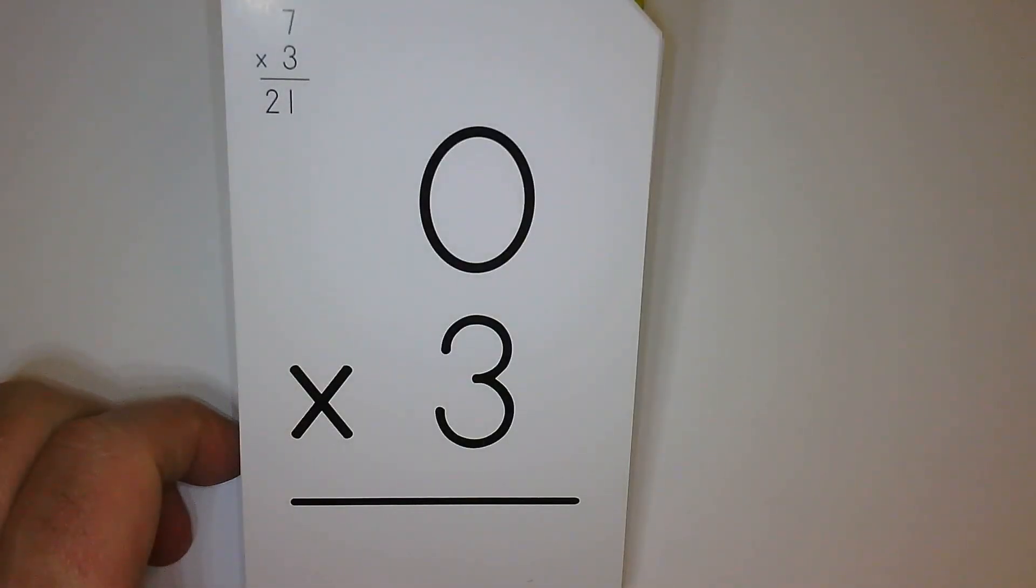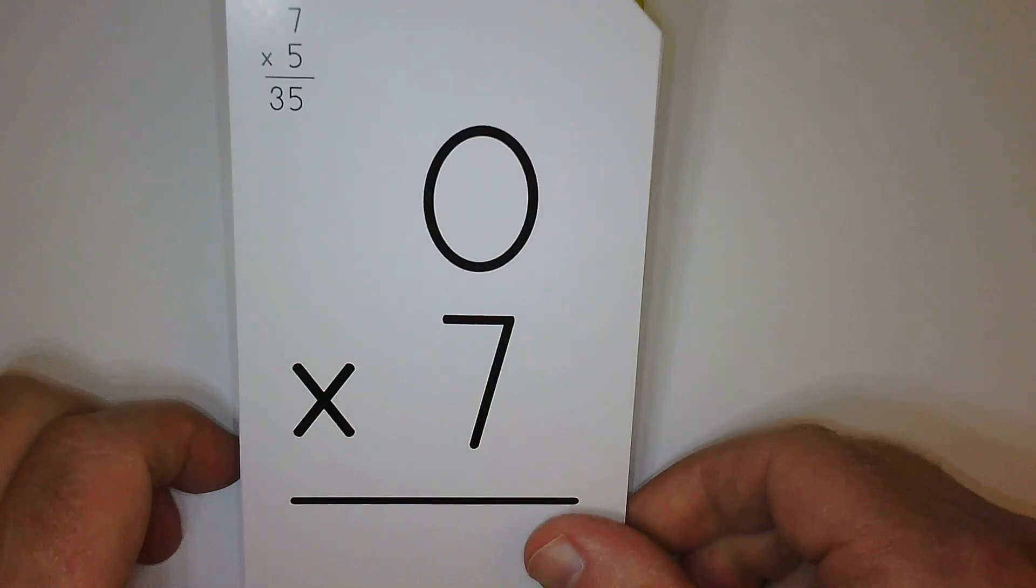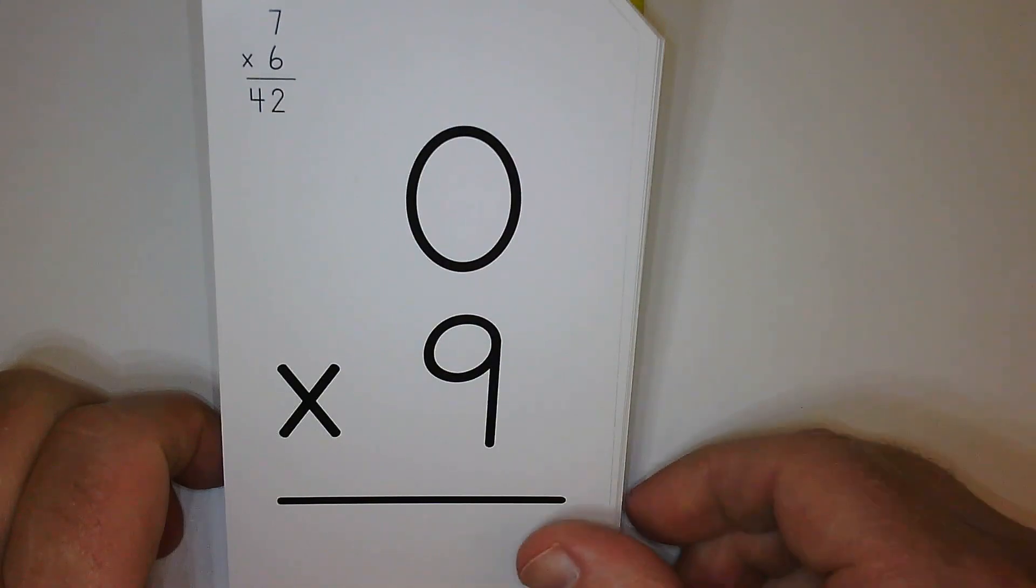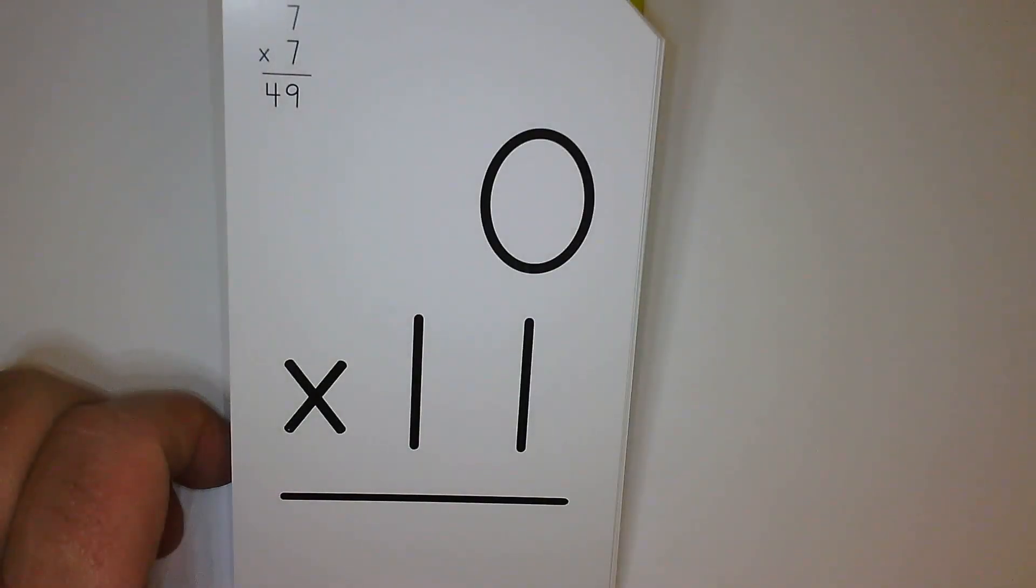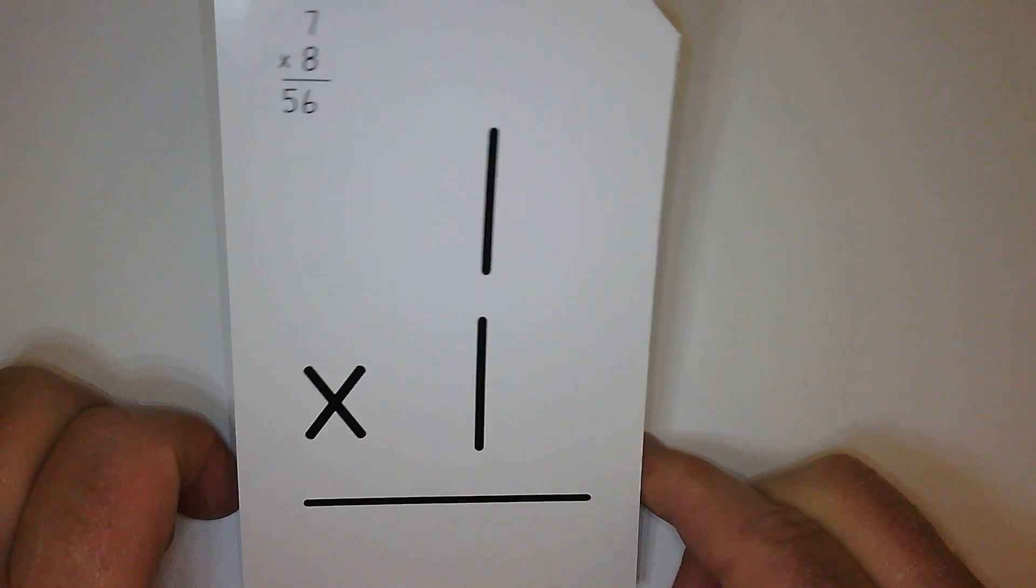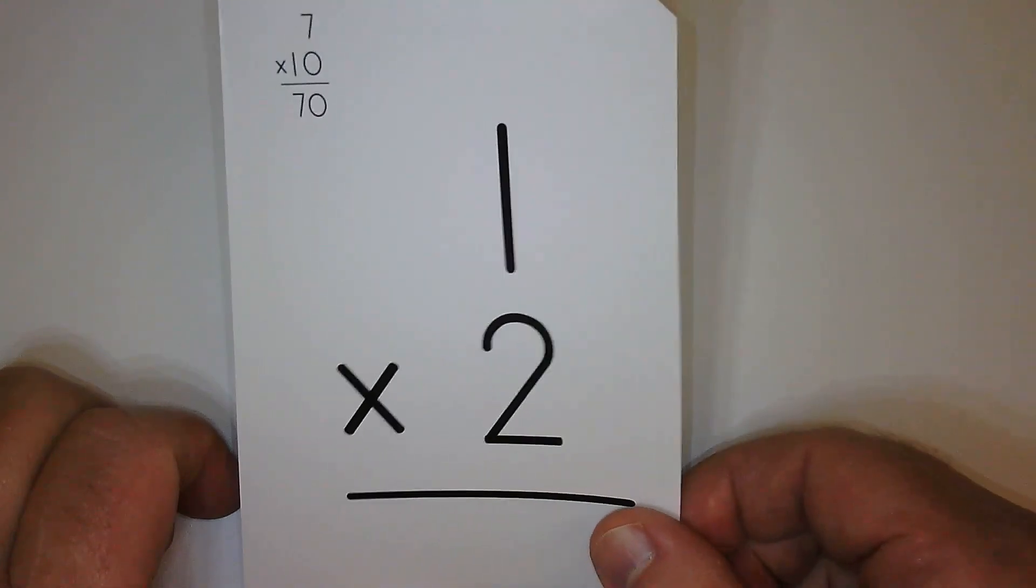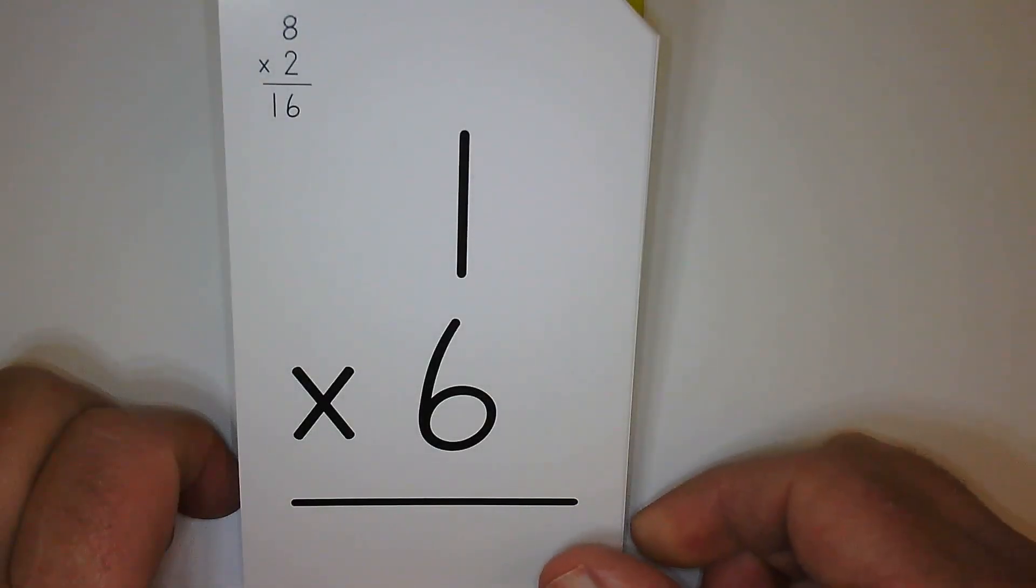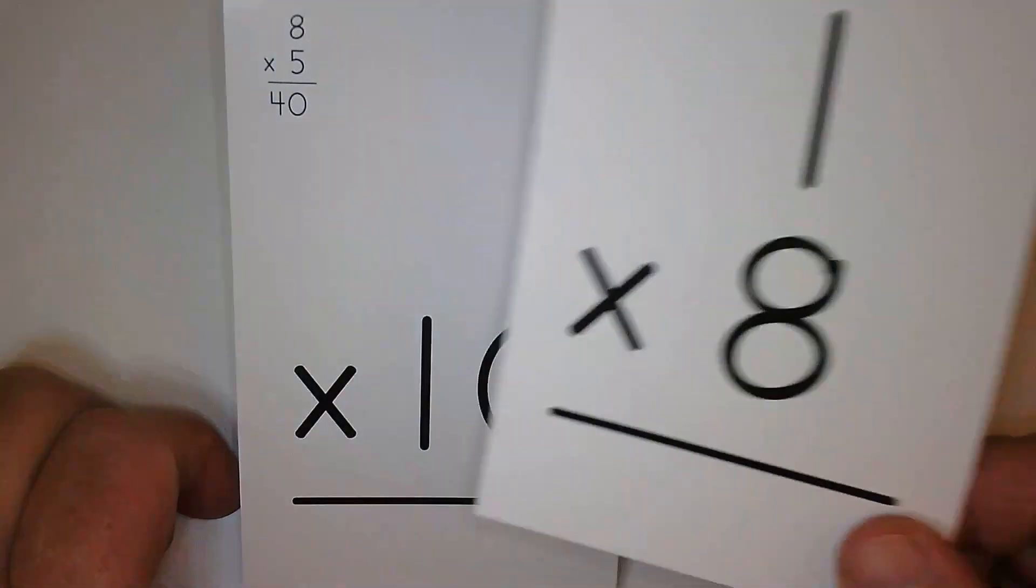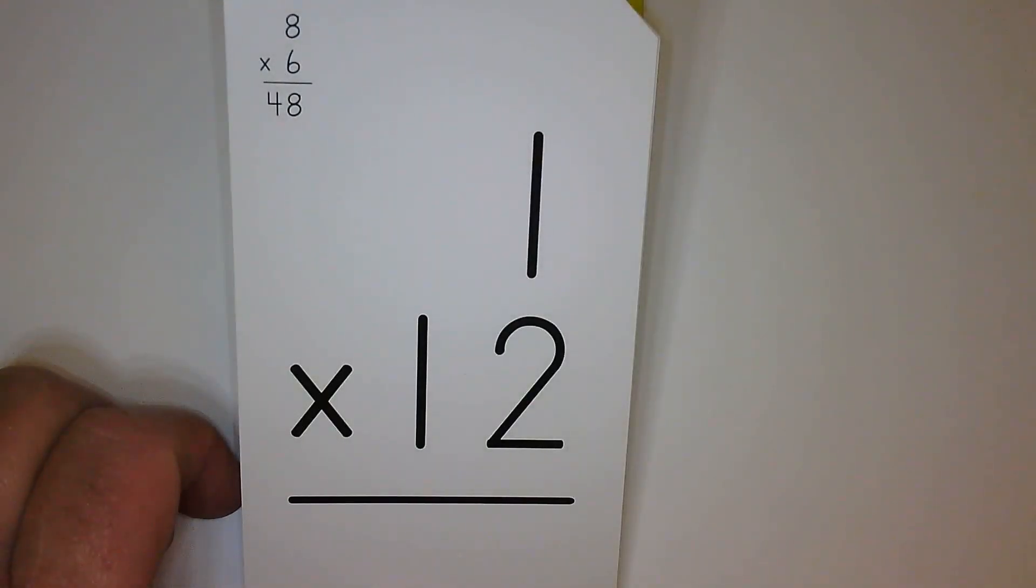Zero, zero, zero. It gets harder I promise. Zero. One times one is one. Two, six, eight, ten, twelve.